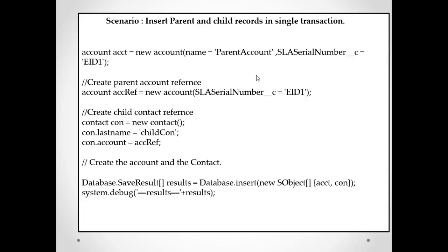Here we have some sample code — for example, Account is the parent and Contact is the child. Generally we use a record ID to insert the child record, but here, instead of a parent record ID, we will use an external ID. Based on this external ID, we can insert the child record in a single transaction.